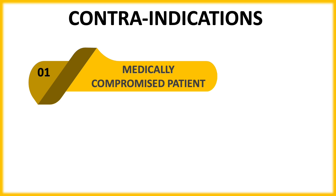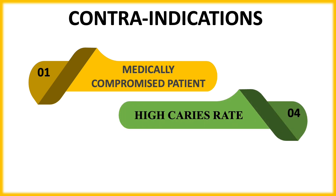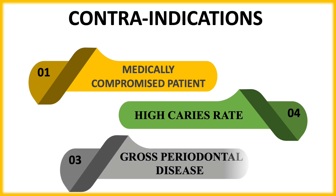Contraindications of Andrew's Bridge: a very common contraindication is a medically compromised patient, as there is a risk the bridge could detach from the bar and be accidentally swallowed. Patients with a high caries index are also contraindicated, as the abutment teeth may decay early. Gross periodontal disease is another contraindication — if the abutment is periodontally compromised, we give a conventional RPD instead.